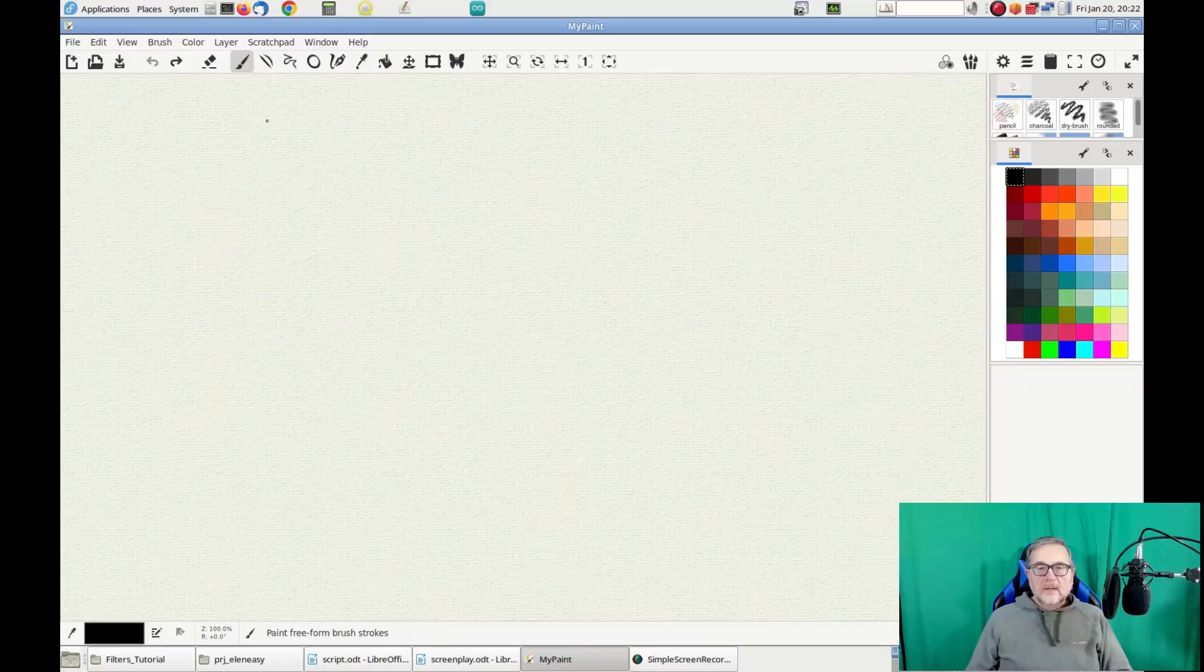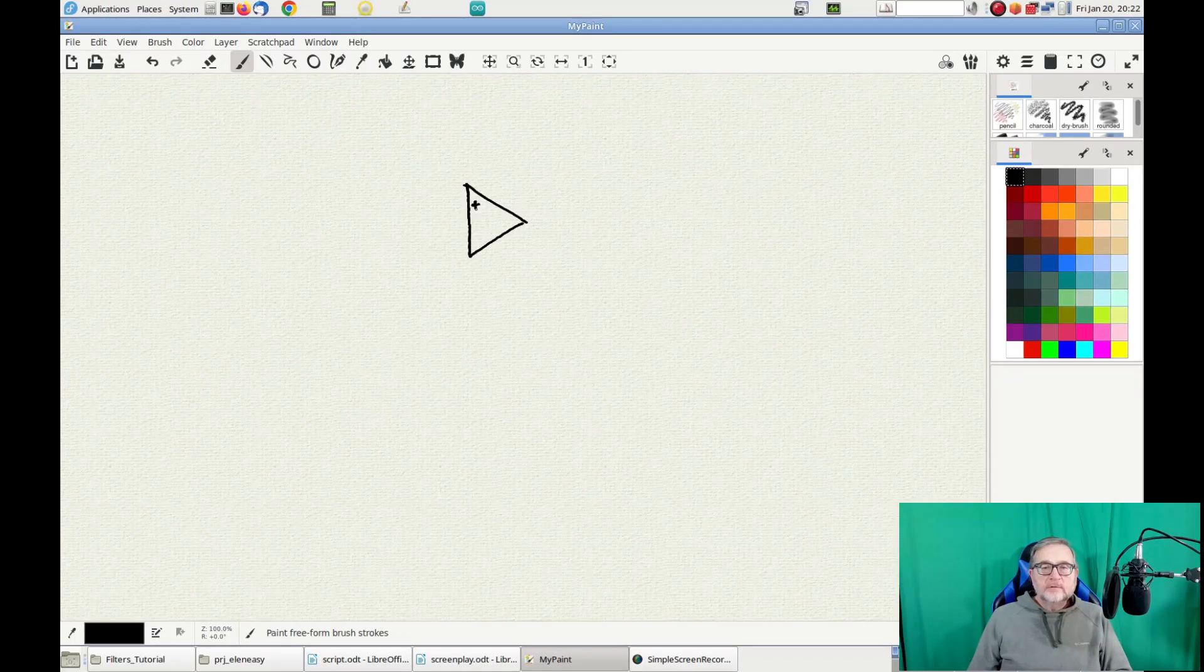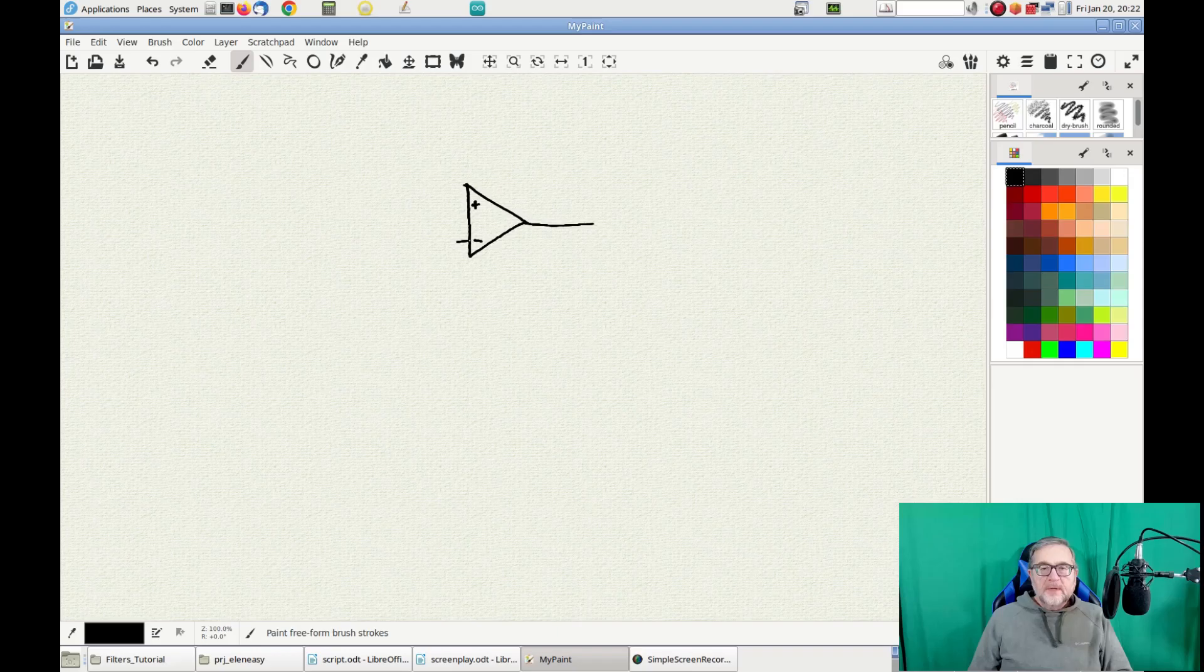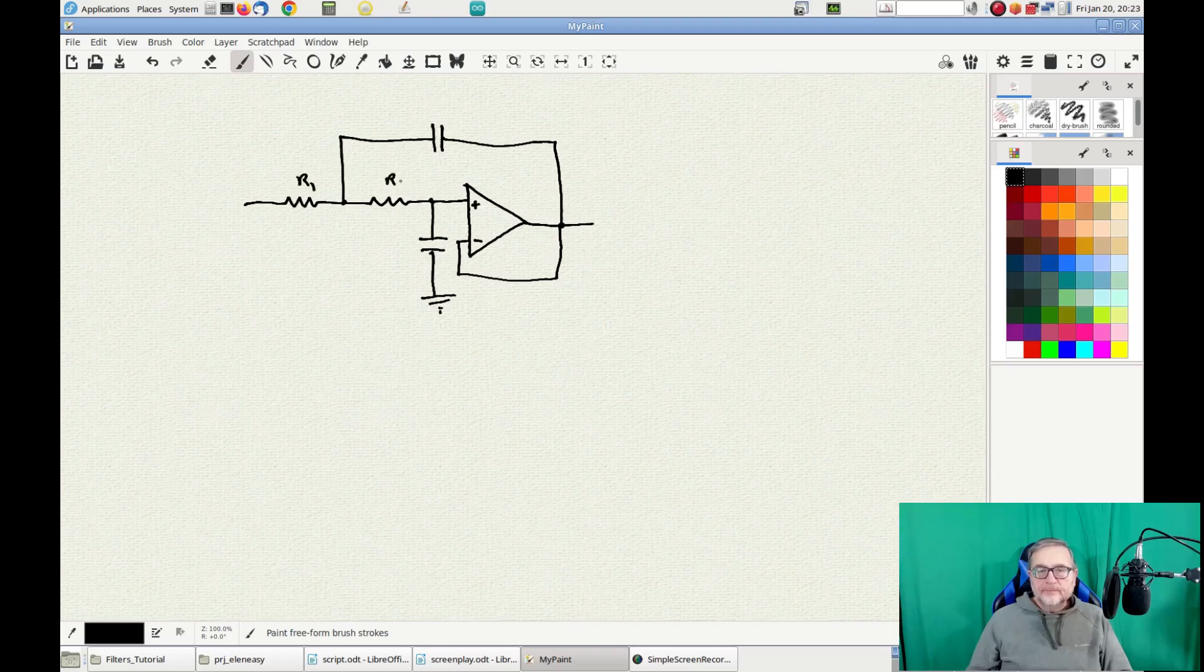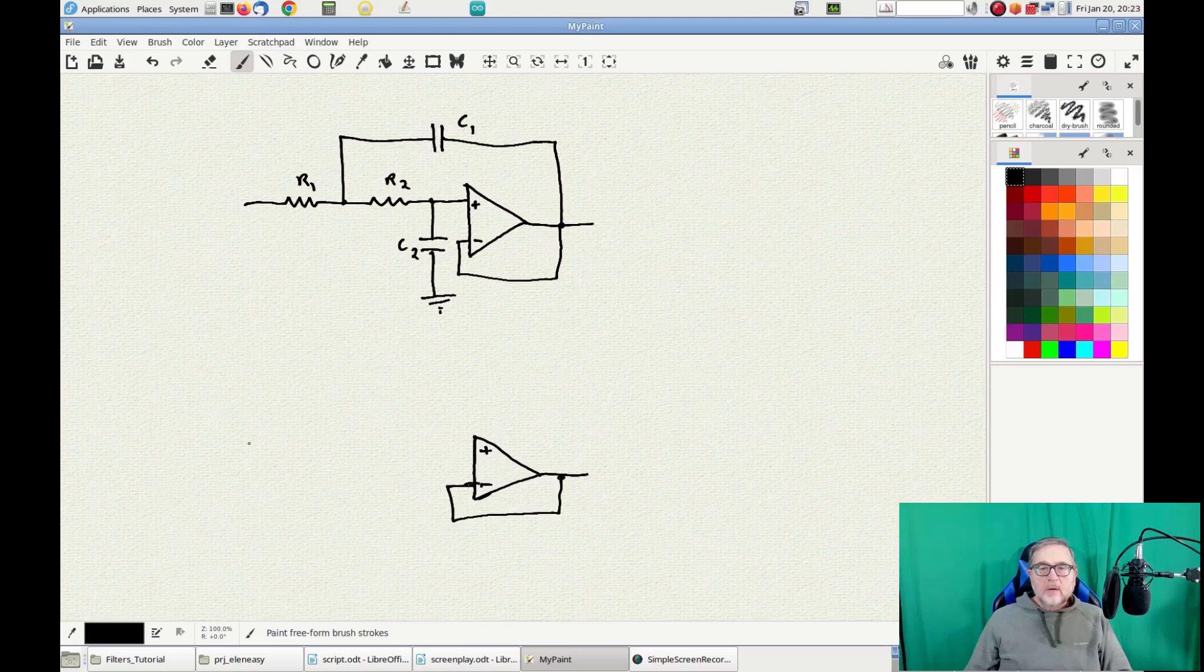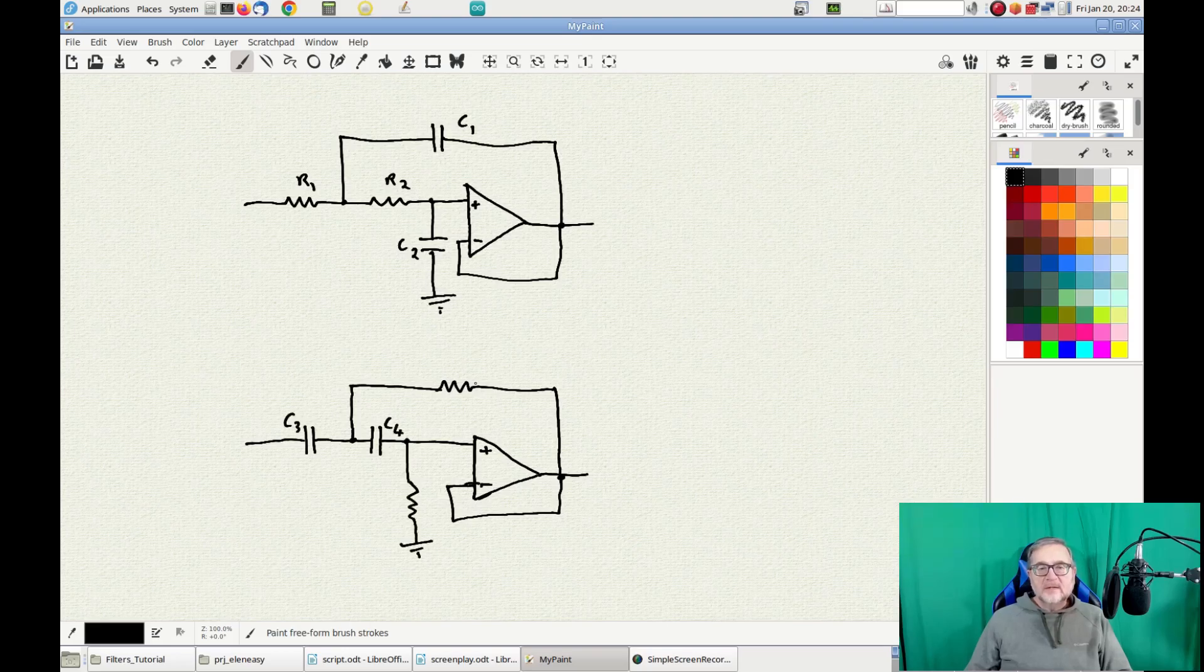Now that we have seen the principle that makes this filter work, let's examine a practical case where we assume we want to design a band-stop filter centered at 10 kilohertz. Let's start by drawing a general schematic for the filter we need. We can start from the low-pass filter. A low-pass Sallen-Key filter can be designed this way, with two resistors R1 and R2 and two capacitors C1 and C2. Then we draw the high-pass filter. This time we have the two serial capacitors C3 and C4 and the two resistors R3 and R4.